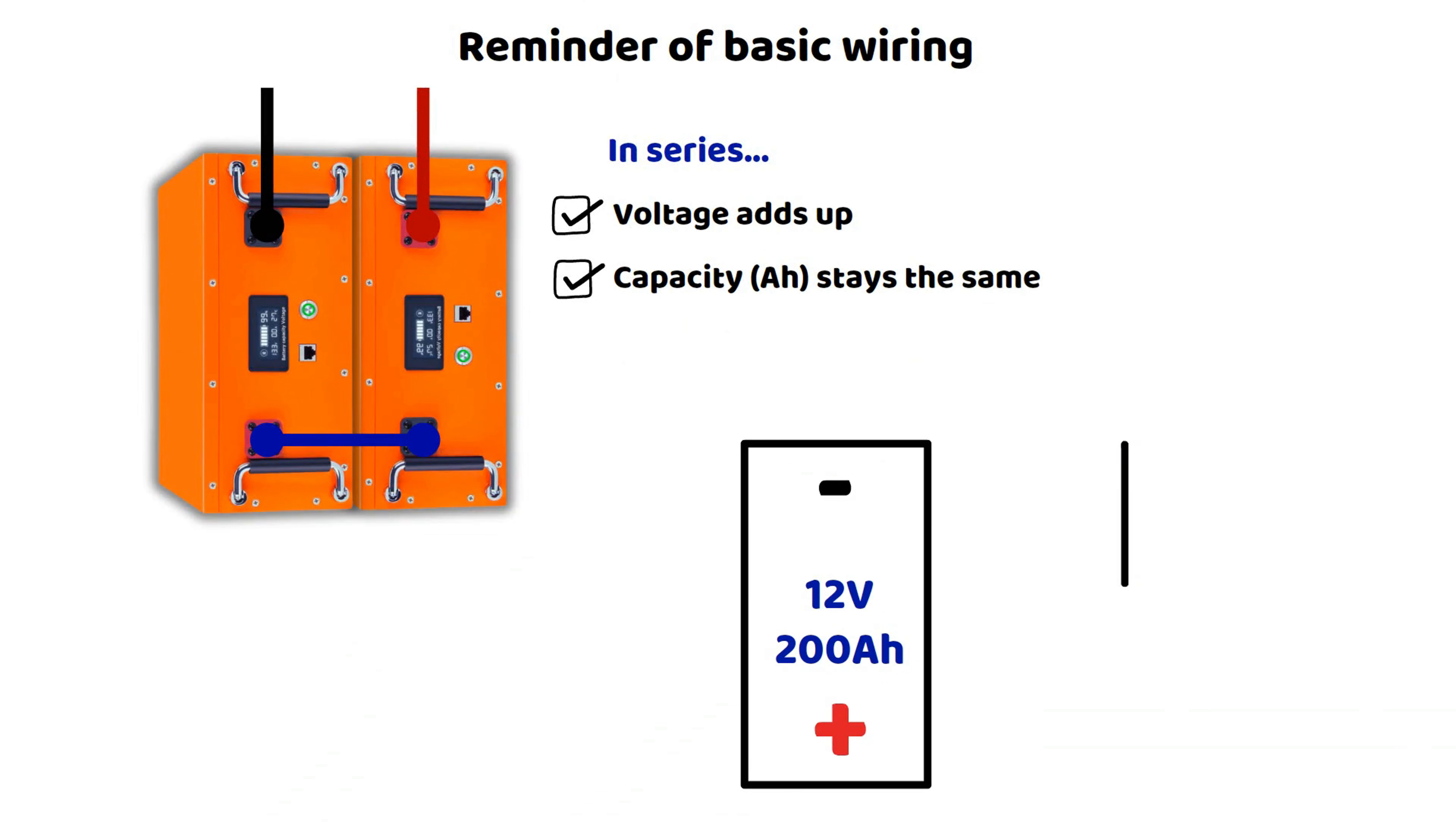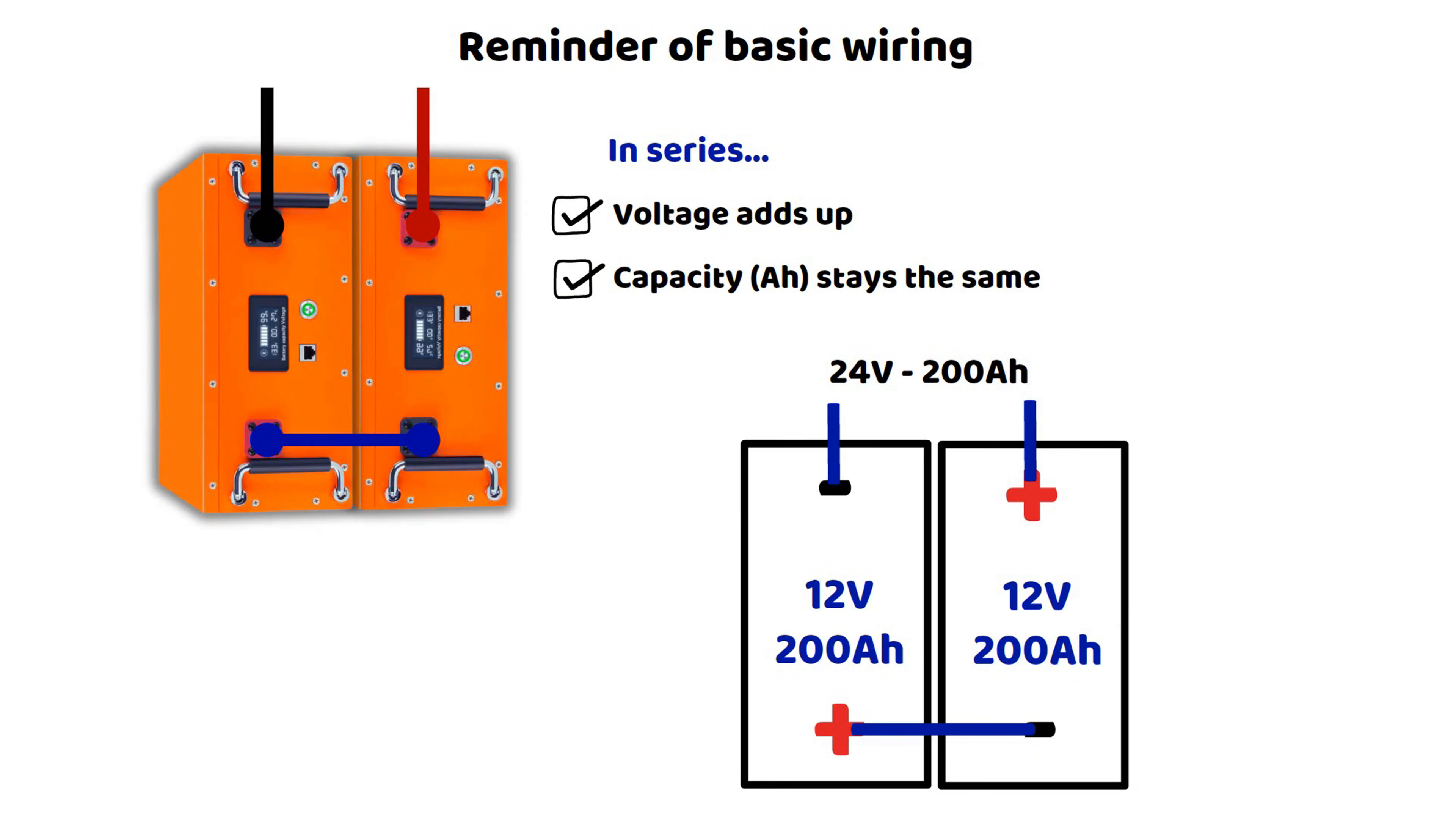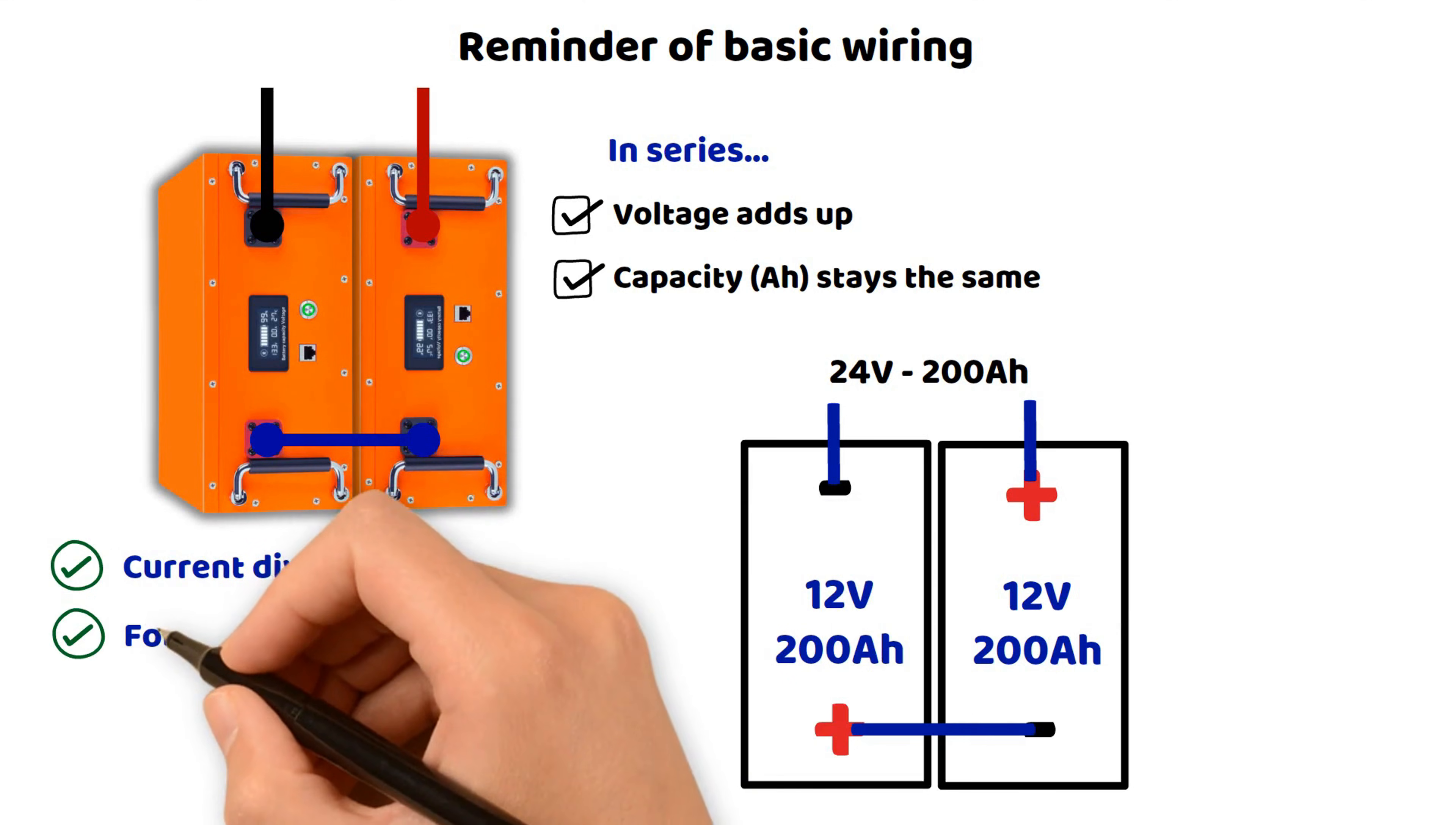This setup is useful when working with higher voltages, such as 24 volts in converted vehicles like camper vans or RVs. It allows the reduction of current flowing through the cables, because the higher the voltage, the lower the current for the same power, which makes it possible to use thinner cables and reduce losses due to the joule effect.